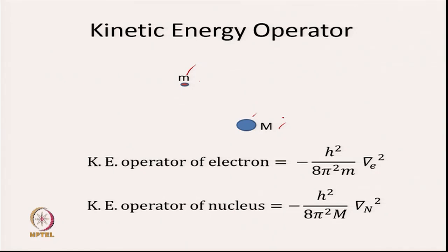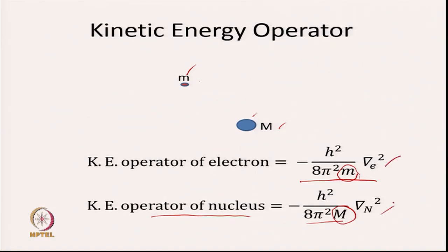These are the two constituents of a hydrogen-like atom — there is only one electron and there is a nucleus. The kinetic energy operator for an electron is written as minus h-squared by 8 pi-squared m, times del-squared, where small m is the mass of the electron. Similarly, we can write the kinetic energy operator for the nucleus in a similar way, using the mass of the nucleus. The del-squared here is the Laplacian operator with respect to electron and nucleus coordinates.